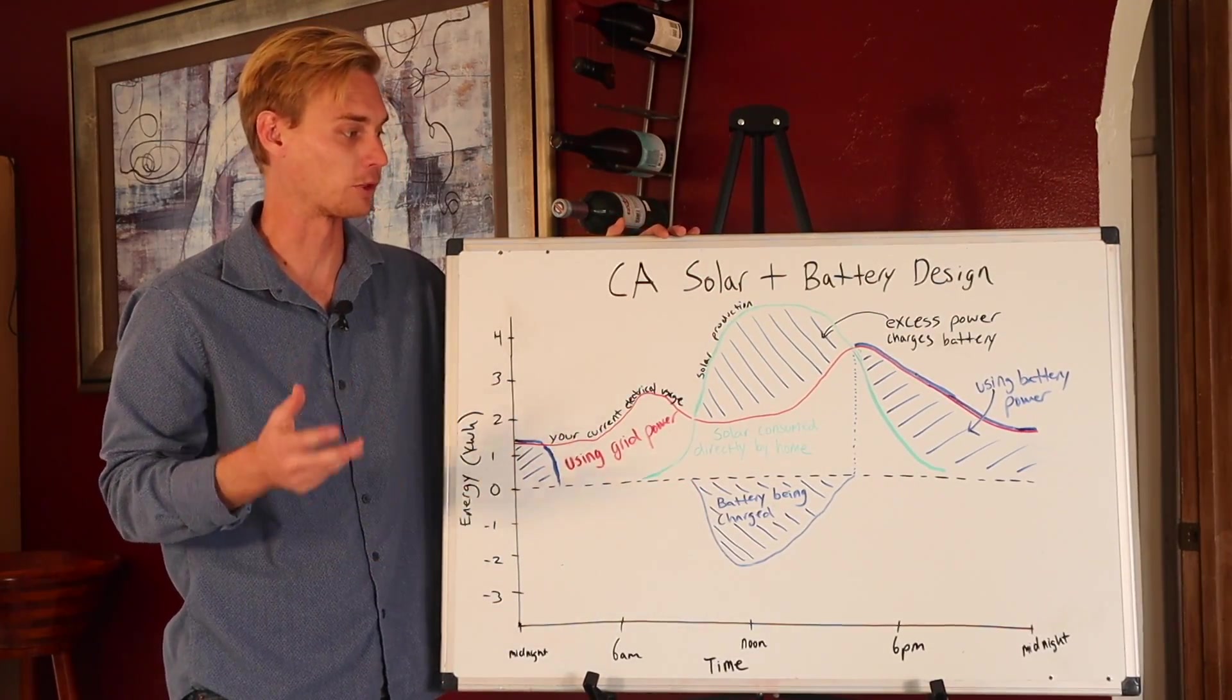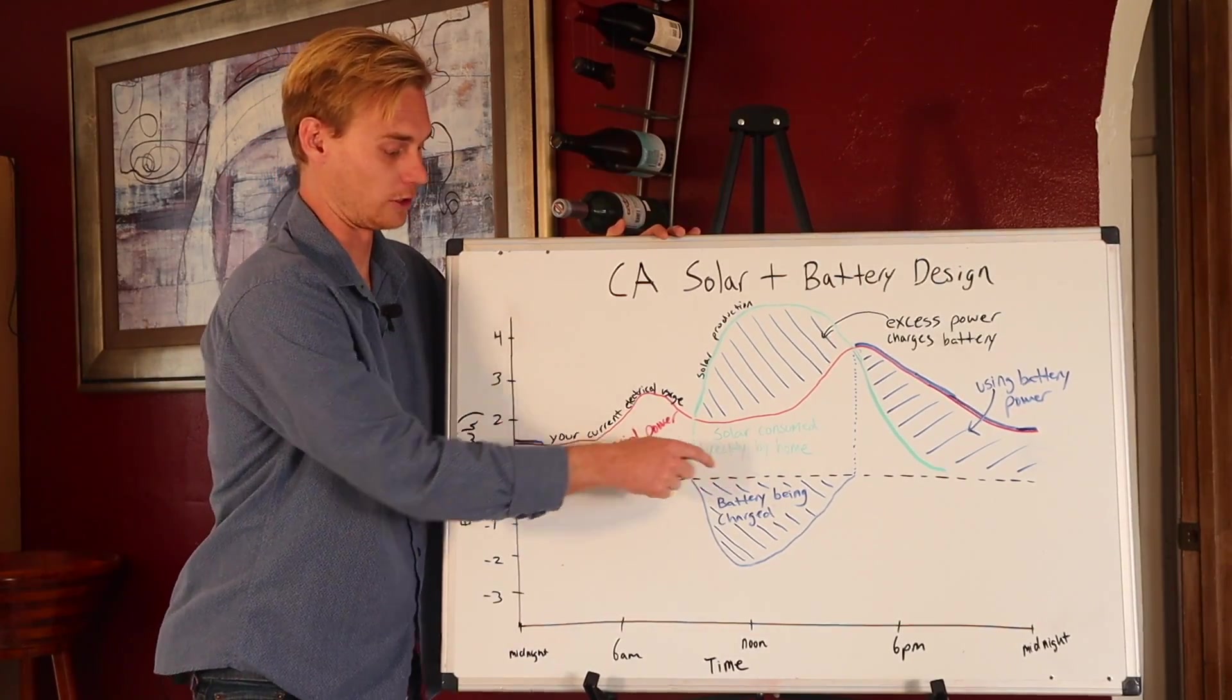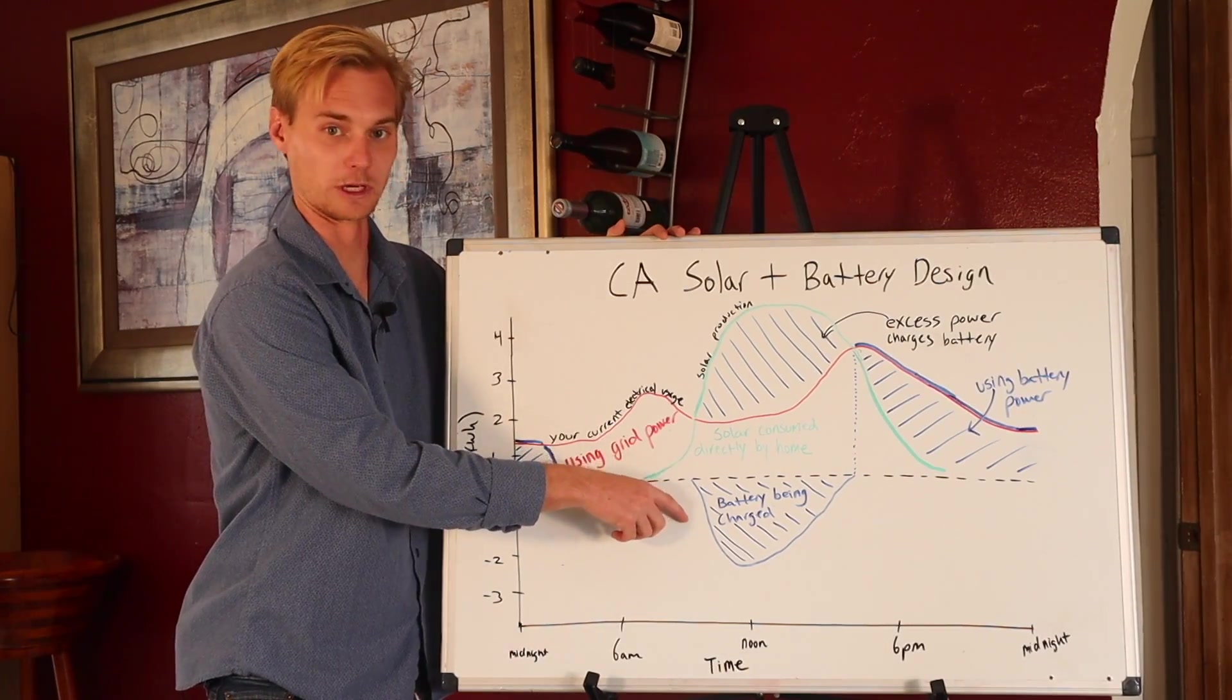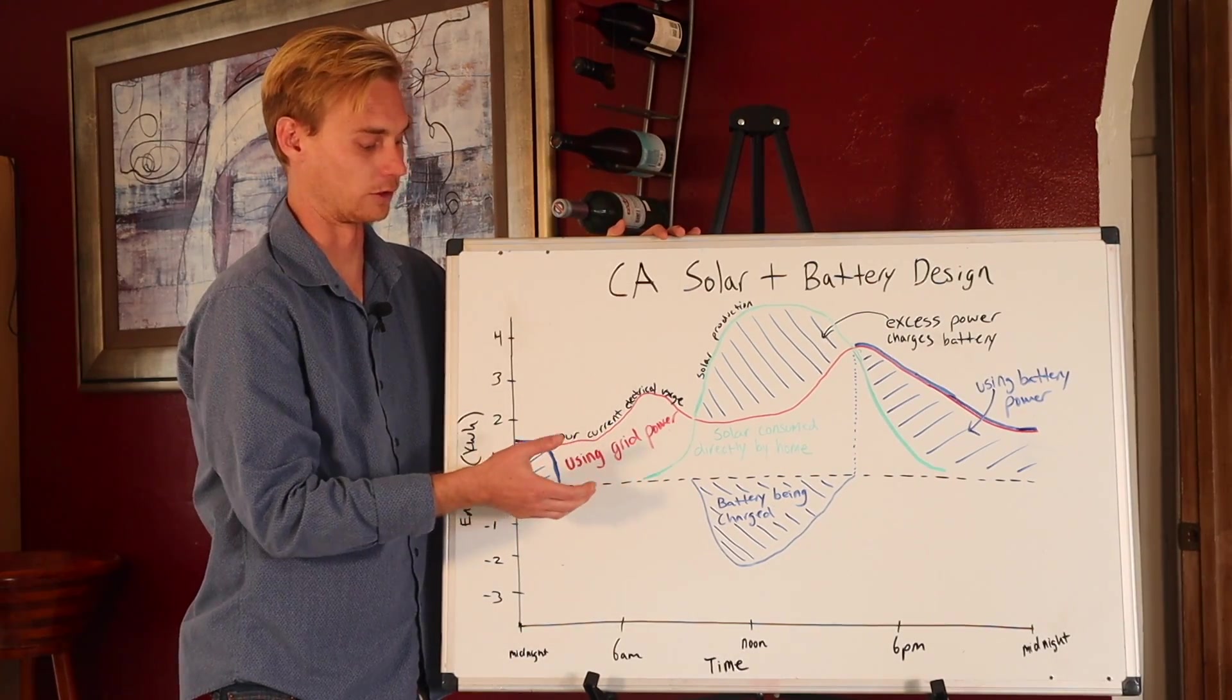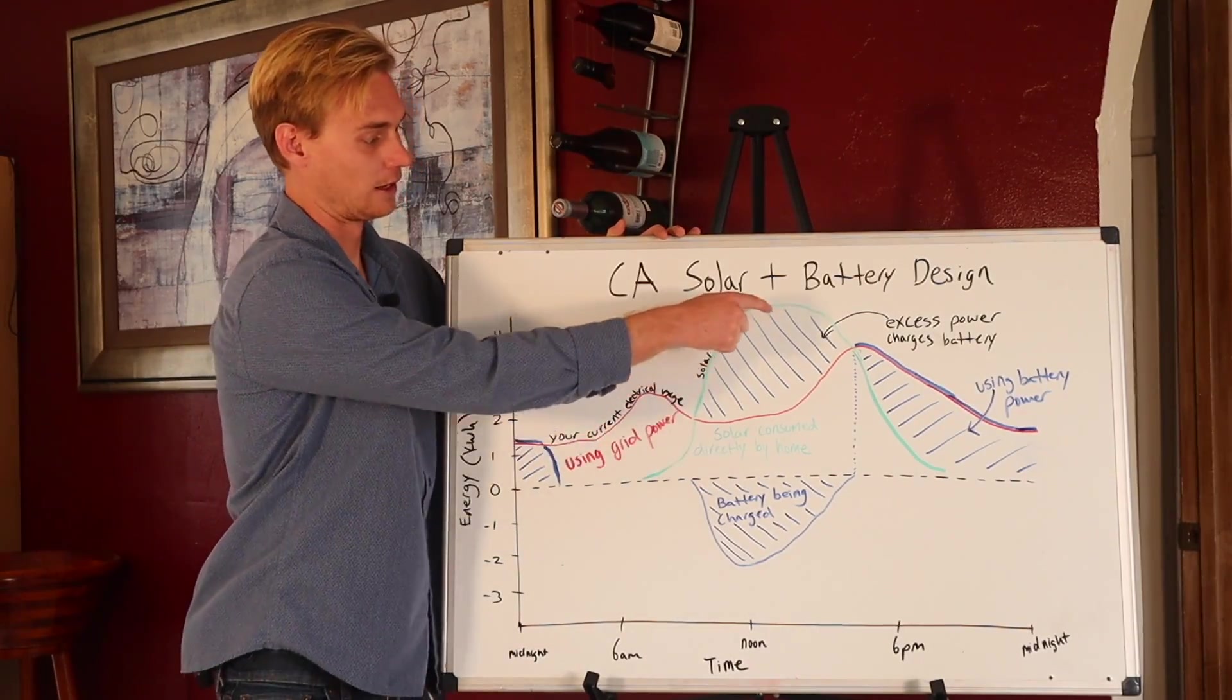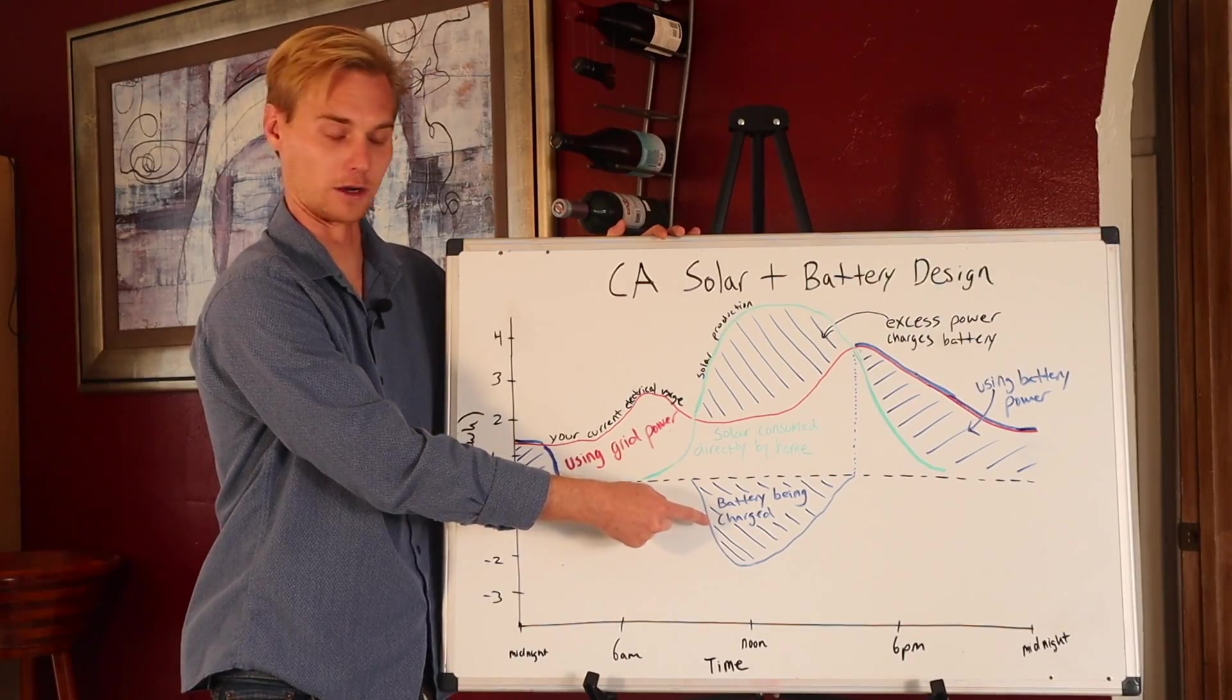And so what the blue is, it represents either the battery getting charged, which down here you see it's actually in the negative. So the home is actually consuming negative power. The battery is not discharging, it's charging up. So we're going to take this power up here, and instead of giving it to the grid, it's going to go into the battery.